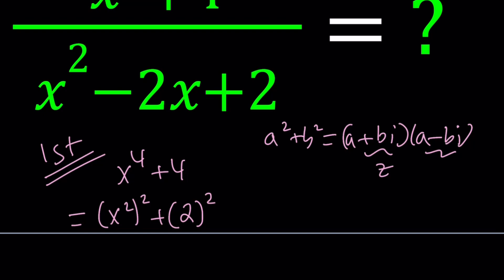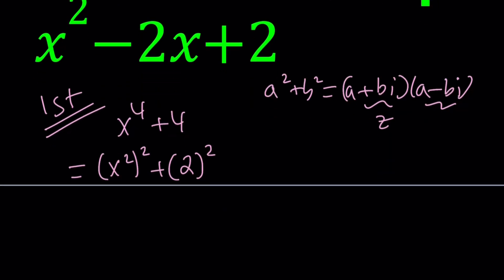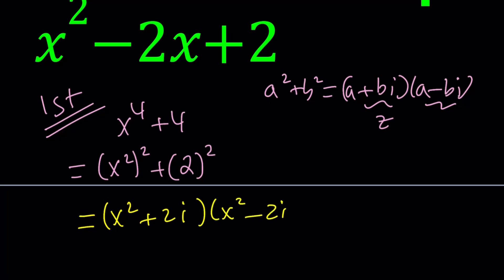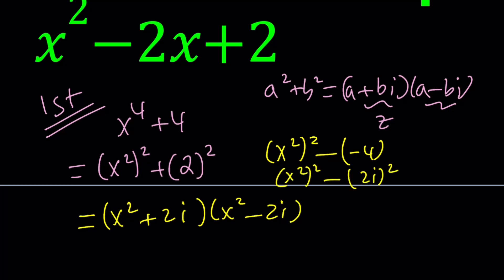Here, x squared is going to be my A, and 2 squared is going to give me 2i. So we get x squared plus 2i and x squared minus 2i. You could also look at it as x squared squared minus negative 4, and negative 4 can be written as 2i squared, and then the factoring follows.